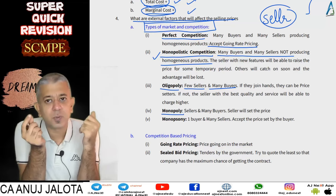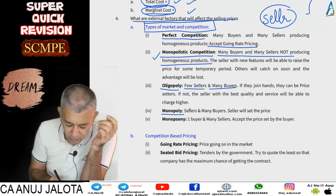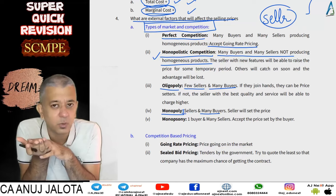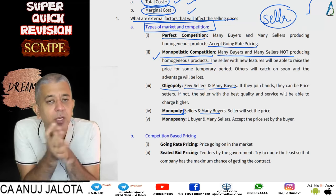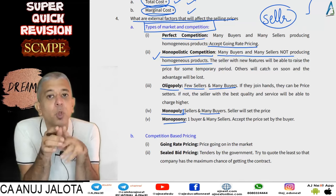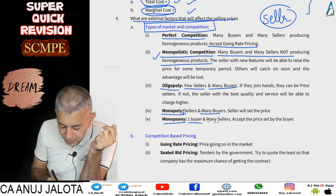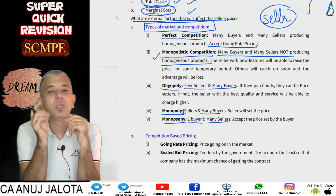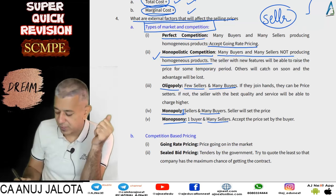Monopoly means one seller and many buyers. In monopoly you can set the price, unless the government imposes restrictions saying you cannot increase prices. Monopsony is the opposite of monopoly — there is one buyer and many sellers. Every seller is selling to that one buyer, so the buyer has the upper hand and the prices at which you can sell will always be less.